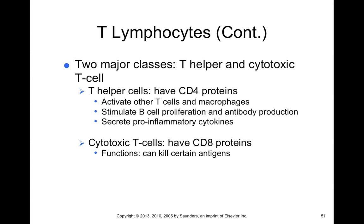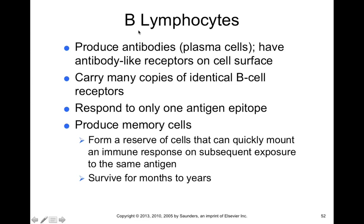B lymphocytes are part of your specific adaptive or learned immune response. They have antibody-like receptors on their cell surface and carry many copies of identical B cell receptors. Like T cells, they can only respond to one type of antigen. B cells can produce memory cells — some cells form clones that become inactive and go dormant in different areas of your body, giving your immune system a learned memory of past infections.